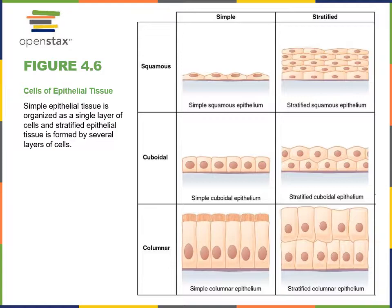A stratified squamous epithelium has multiple layers of cells, and the cells at the apical surface are flattened with a height less than the width. A stratified cuboidal epithelium is multiple layers of round cells. And a stratified columnar epithelium is multiple layers of cells that are tall, with the cells at the apical surface being taller cells.